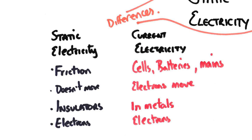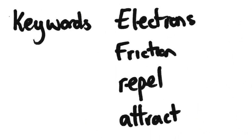Key keywords to know: electrons are the negative particles, the smallest we know, carrying a charge of minus one. Friction is how we charge things for static electricity. Like charges repel — positive and positive repel, negative and negative repel. Opposite charges attract — positive and negative attract. 'Opposites attract' is the phrase often used. That's everything you need to know on static electricity.